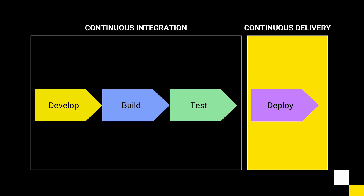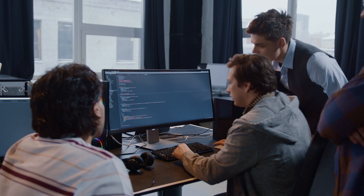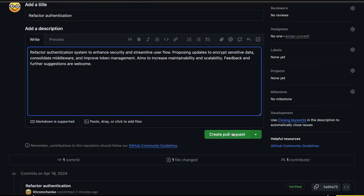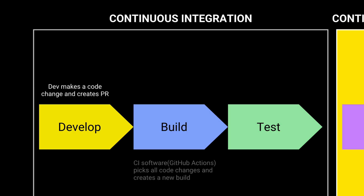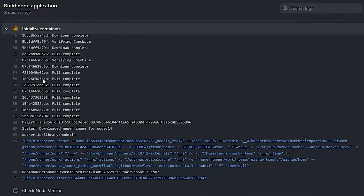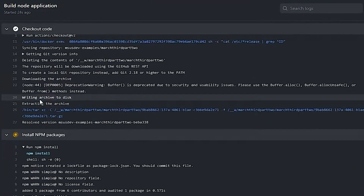Let me quickly explain why. First, a software developer makes a code change and creates a pull request in GitHub, for example. And then it will automatically be picked up by the CI software — in our case GitHub Actions, or Jenkins, or Codefresh. Regardless, the CI software will pick up the code and create a new build.